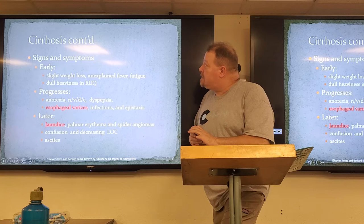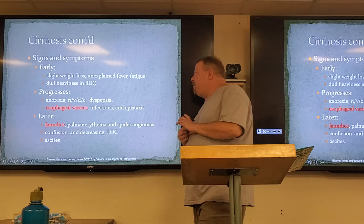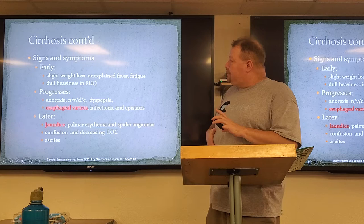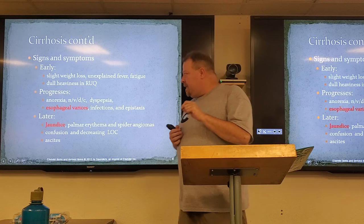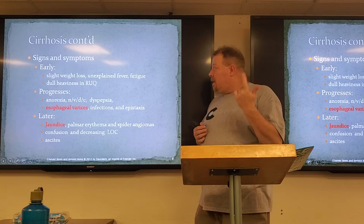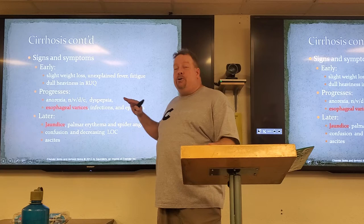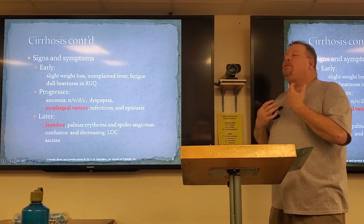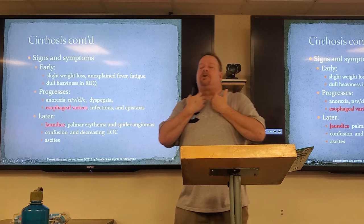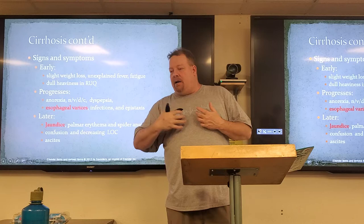Signs and symptoms — early: slight weight loss, unexplained fever and fatigue, dullness and heaviness in the right upper quadrant. As it progresses: increasing anorexia, nausea, vomiting, diarrhea, constipation, and dyspepsia. Esophageal varices — because of portal hypertension, you develop these inflamed vessels near the esophagus. What would you not want to do on a patient with esophageal varices? An NG tube — because as it goes down, you can nick one of those varices and the patient bleeds out rapidly.